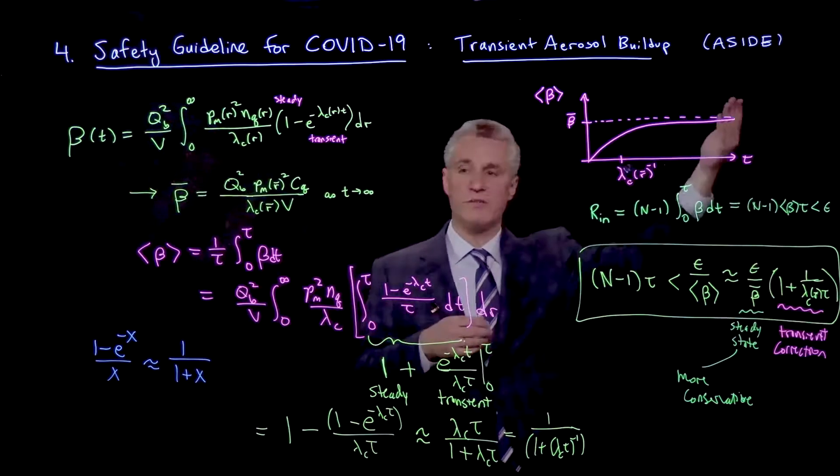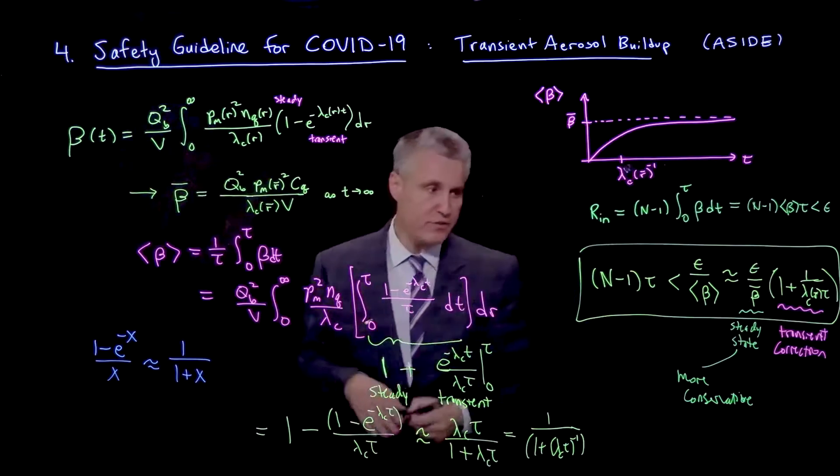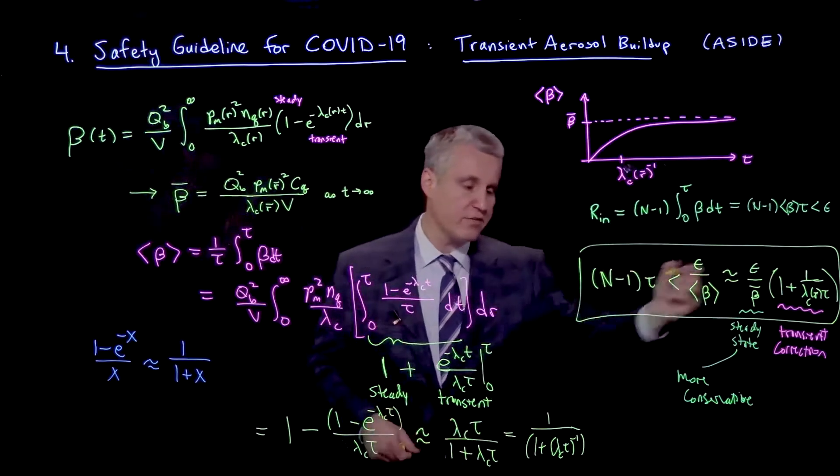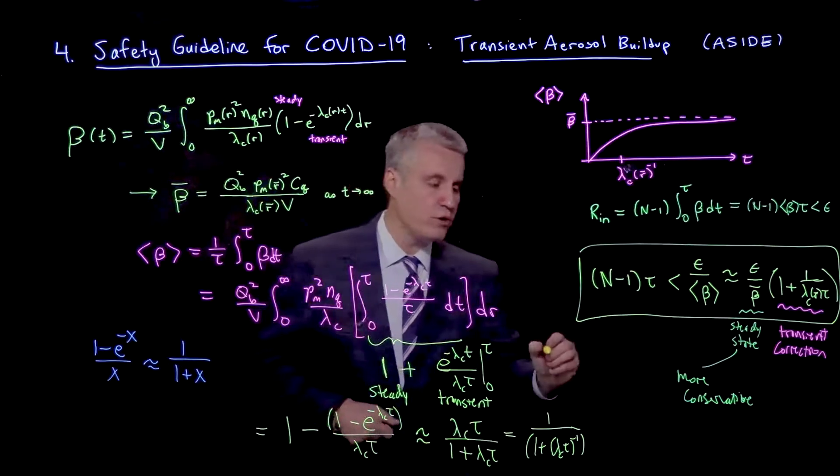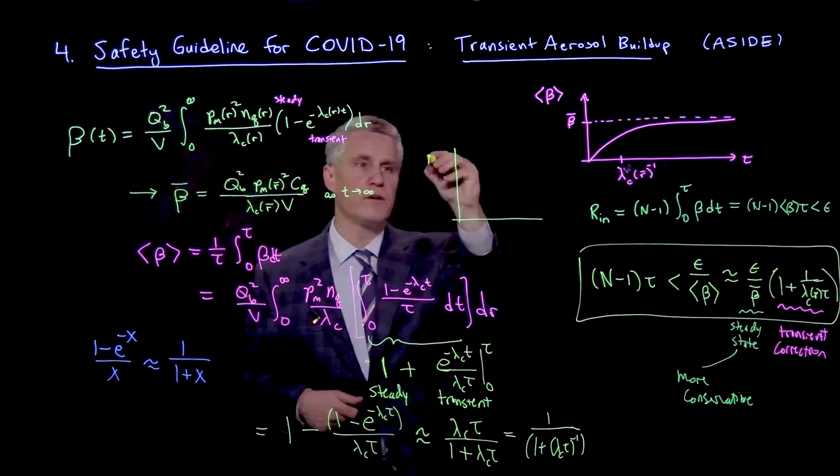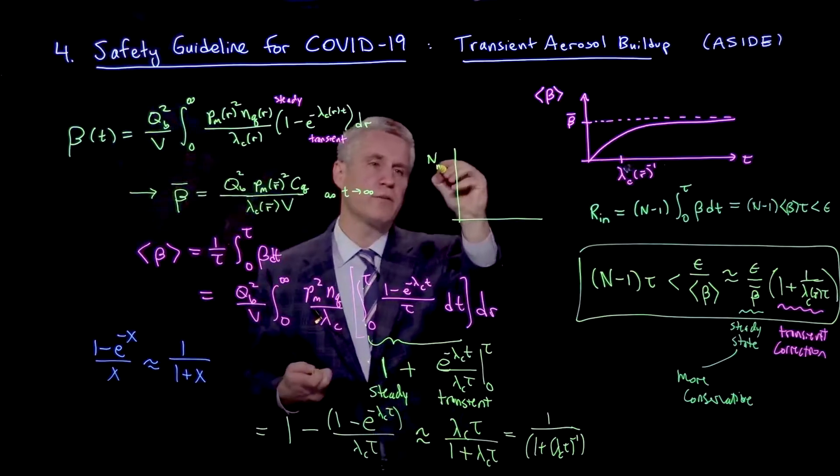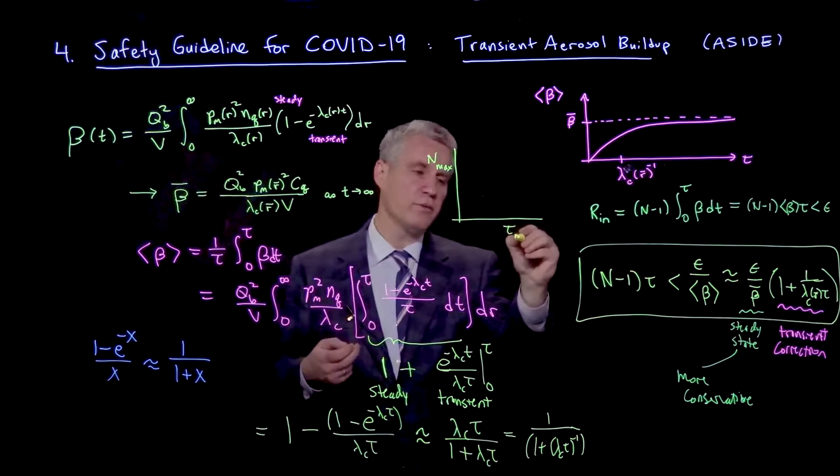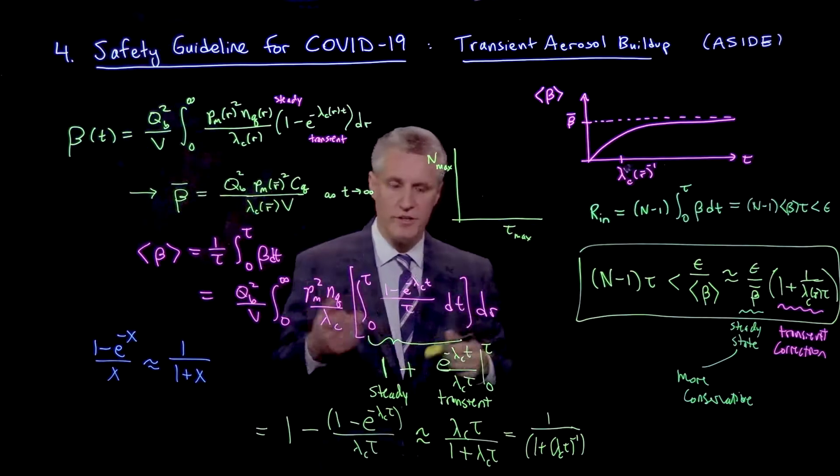Then as you see as tau goes to 0, actually this term diverges. So what actually happens is that if I calculate sort of, for example, what I can get from this guideline is what is the sort of maximum occupancy versus time, or it's sort of the maximum time in the room for a given occupancy.